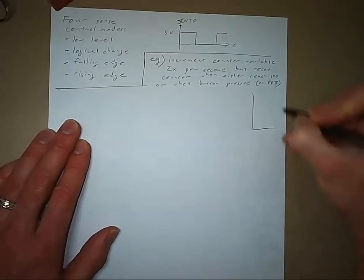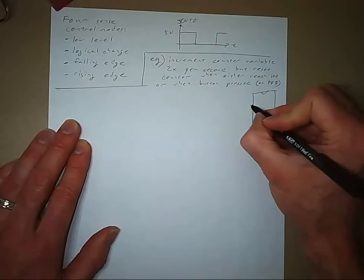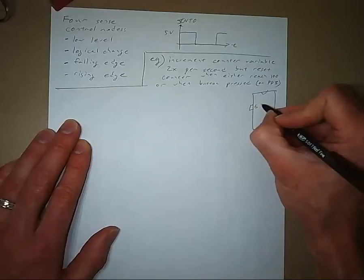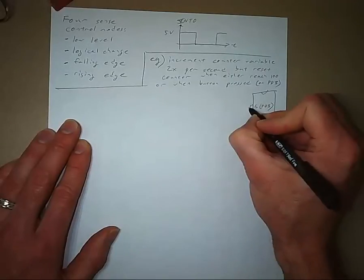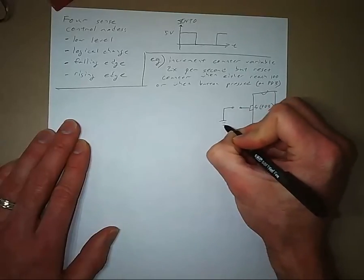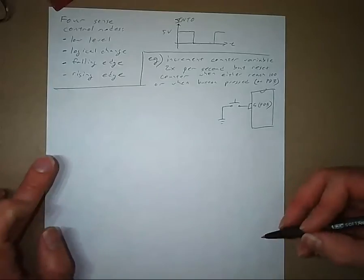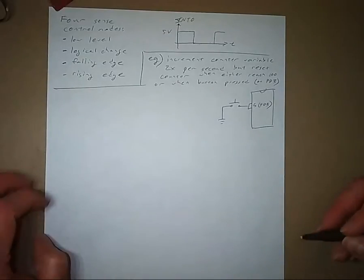And that button is going to be connected to port D pin three. So here's a little drawing of our microcontroller. Port D pin three is physical pin number five. And connected to that pin, we have a button that is going to pull that pin to ground whenever the button is pressed. So let's get to the code.